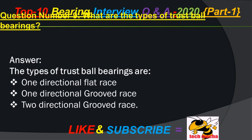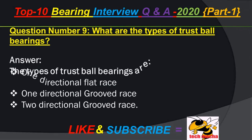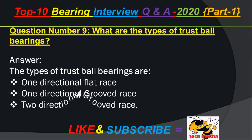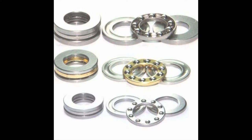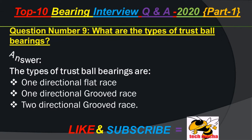Question number 9: What are the types of thrust ball bearings? Answer: The types of thrust ball bearings are: one, one-directional flat race; two, one-directional grooved race; three, two-directional grooved race.